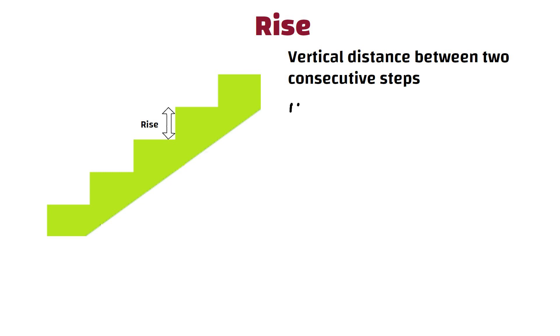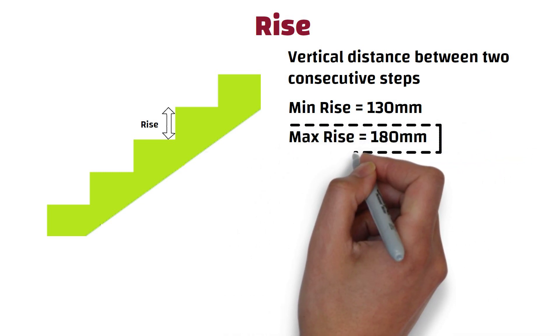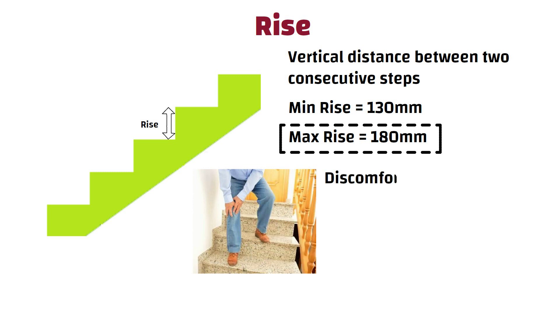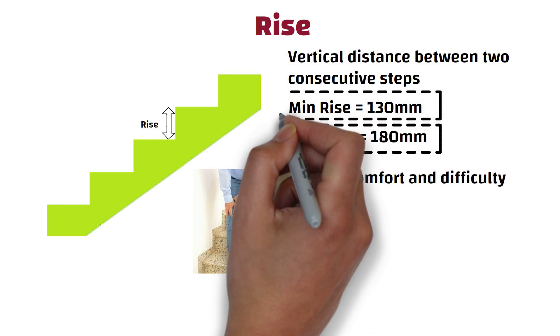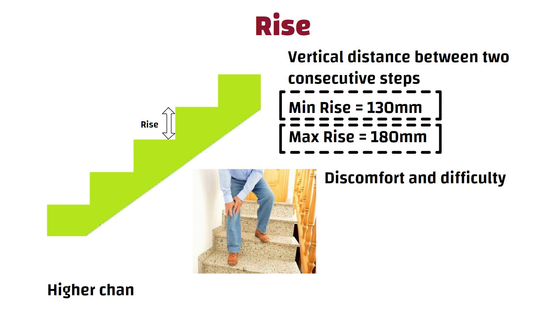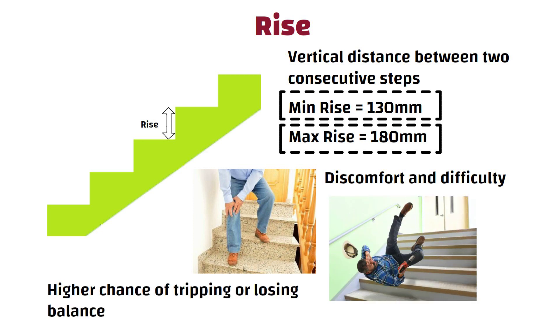1. Rise. Rise refers to the vertical distance between two consecutive steps. The minimum rise should be 130 mm while the maximum rise should be 180 mm. If the rise is kept more than the standard height, it may cause discomfort and difficulty while climbing the staircase. On the other hand, if the rise is less than the standard height, it may lead to a higher chance of tripping or losing balance while navigating the stairs. For house, the ideal size of the rise in a staircase is between 130 mm and 150 mm.